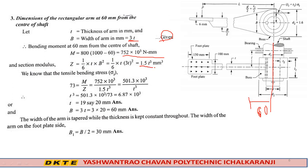We know that the tensile bending stress σₜ equals M/Z. Substituting values for M and Z, we get t approximately equals 19 to 20 mm. Taking t equals 20 mm for safe design, and B equals 3t equals 60 mm. The width of the arm is tapered while thickness is kept constant throughout. The width of the arm on the foot plate side, b₁ equals B/2 equals 30 mm.